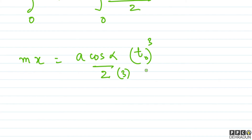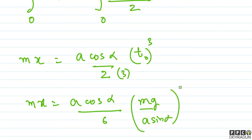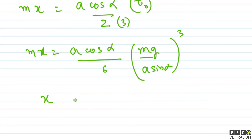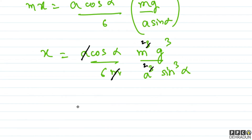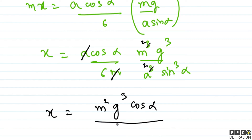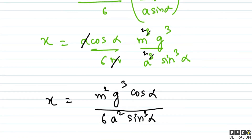अब यहाँ पर t₀ की value put करनी पड़ेगी: mg/(a·sinα)। तो m·x = a·cosα/6 × (mg/(a·sinα))³। यहाँ से देखिए: x = a·cosα/(6m) × m³g³/(a³·sin³α)। कुछ चीज़ें cancel out हो जाएंगी — एक a cancel होगा, m का square बचेगा — तो finally x = m²g³·cosα / (6a²·sin³α).